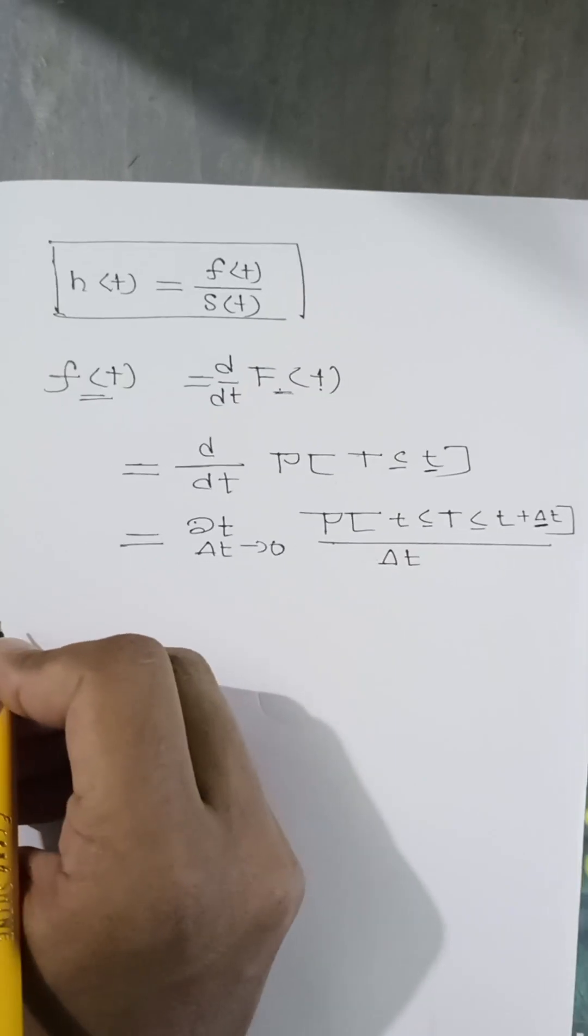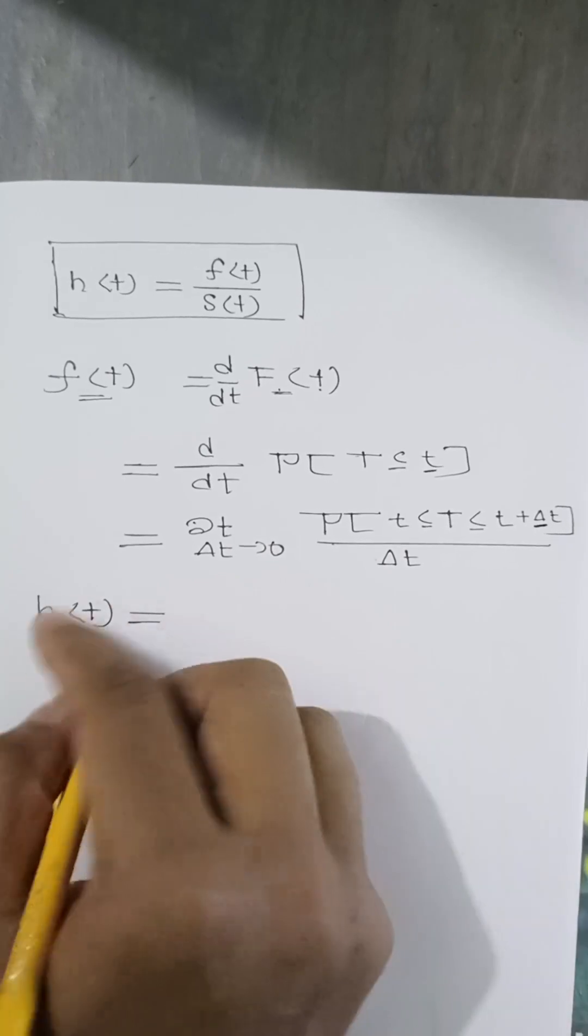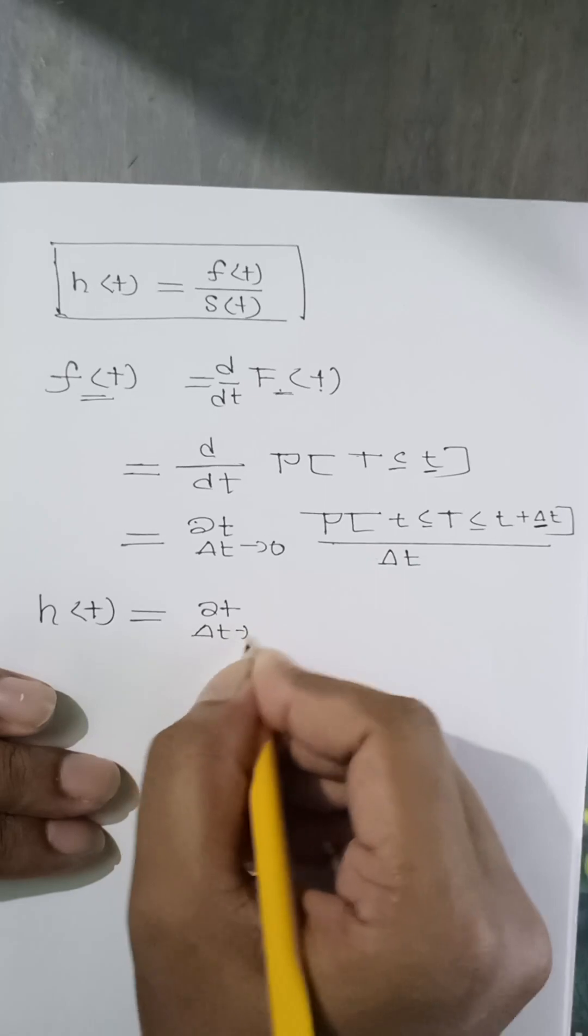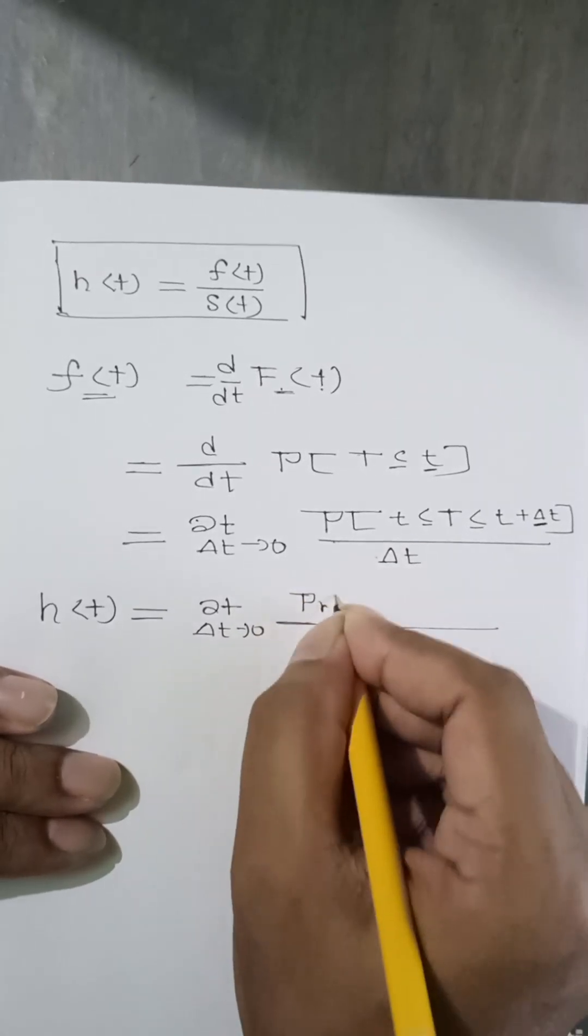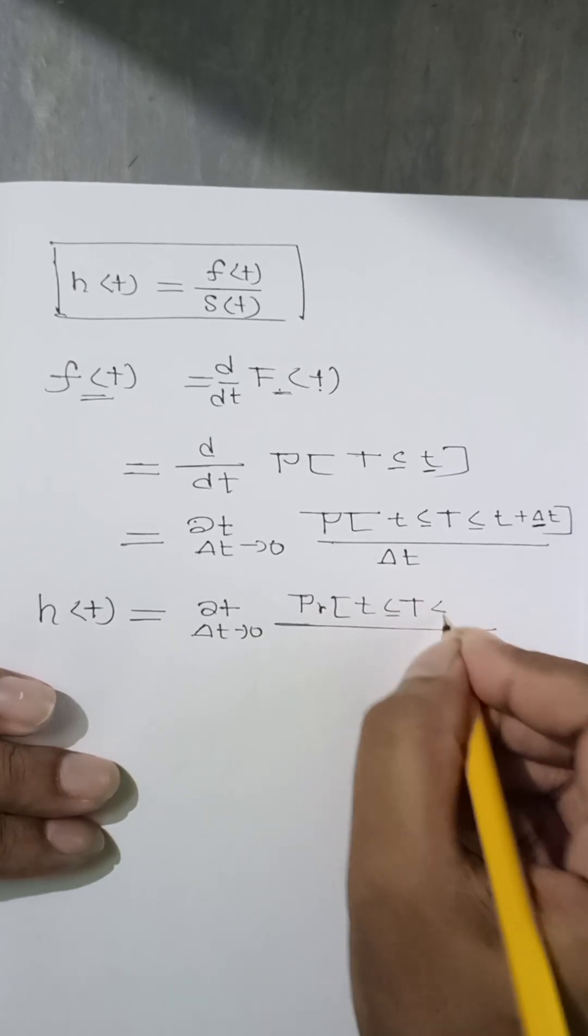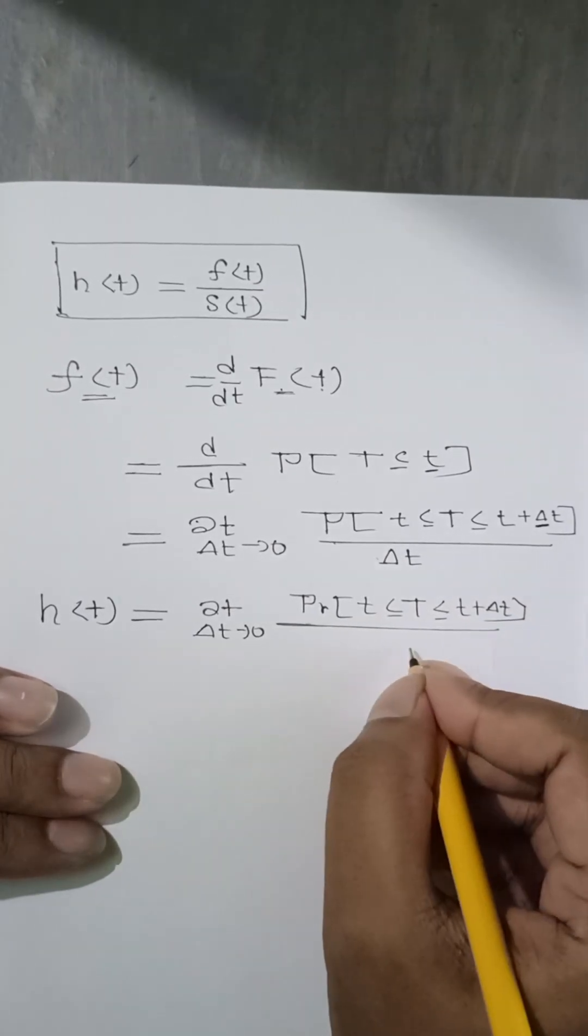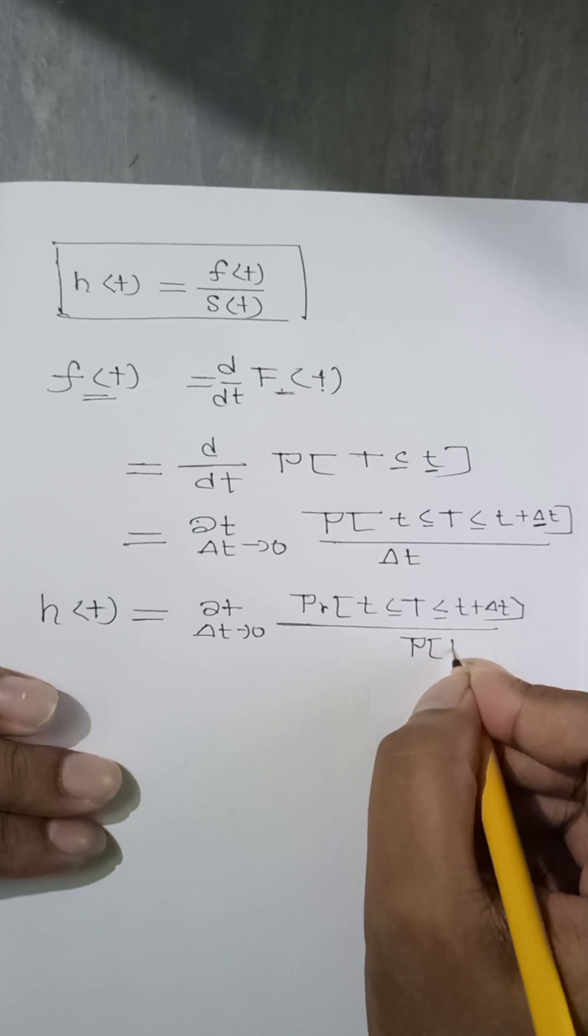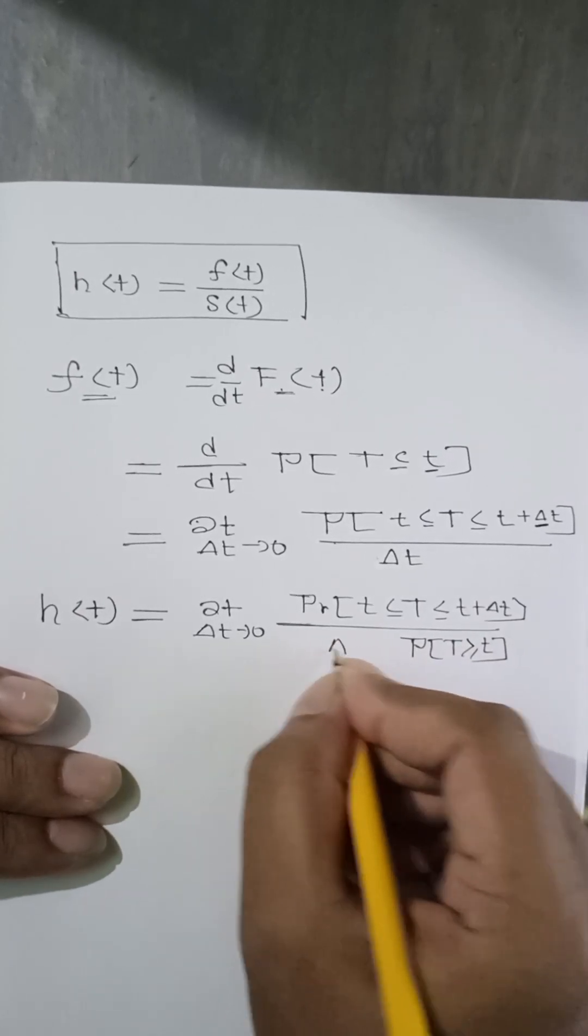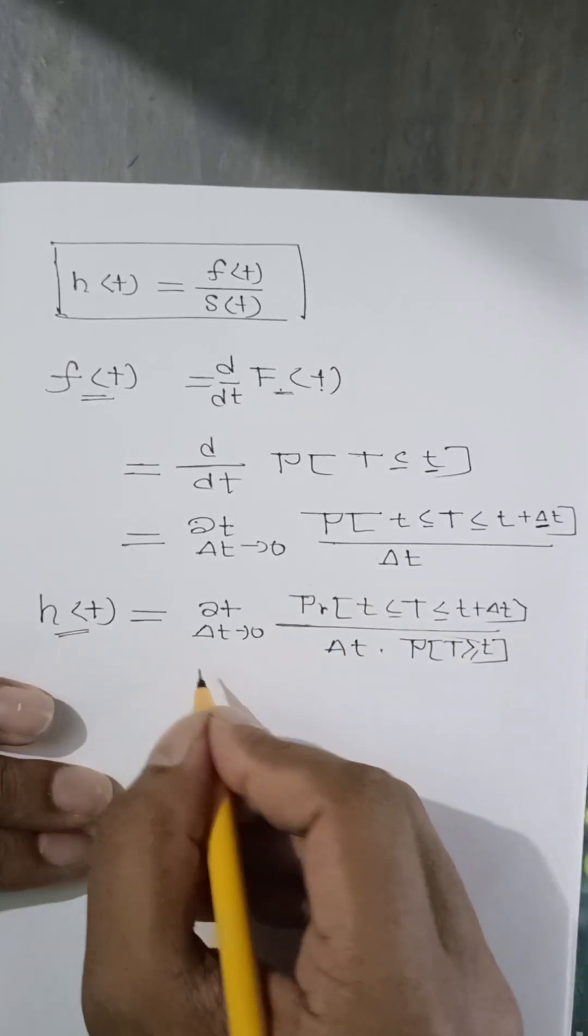We can find the hazard function by the definition of the hazard function. We know that d del t tends to 0, and it will be probability of t less than T less than or equal to t plus del t, and at the denominator it will be probability of T greater than or equal to t times del t. This comes from the hazard function definition.